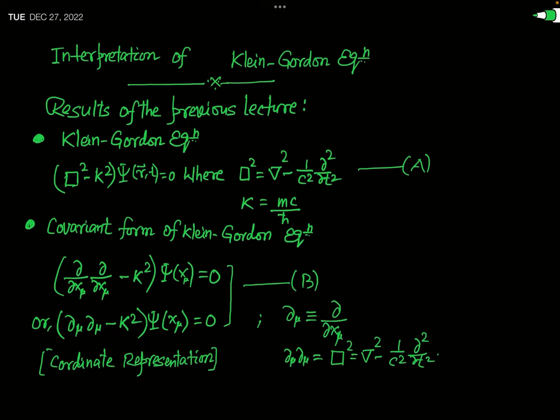In the previous lecture on the Klein-Gordon equation, we saw the deduction of this equation. Klein and Gordon obtained this equation by the repeated operation of the Hamiltonian operator on the Schrödinger time-dependent equation. The equation they obtained is known as the KG equation or Klein-Gordon equation, and you learned about its deduction in detail in the first lecture.